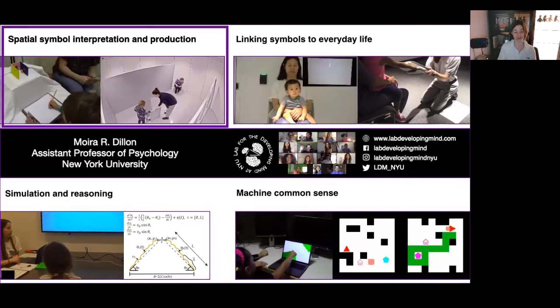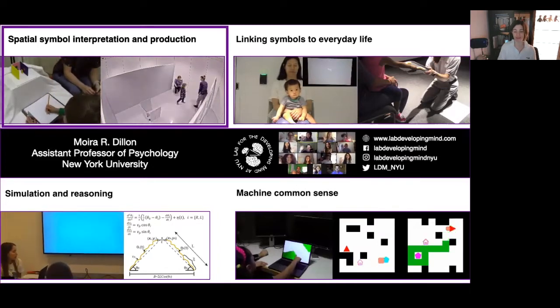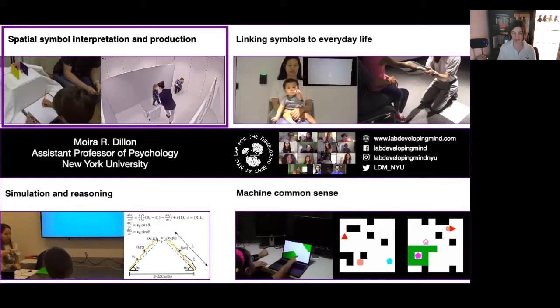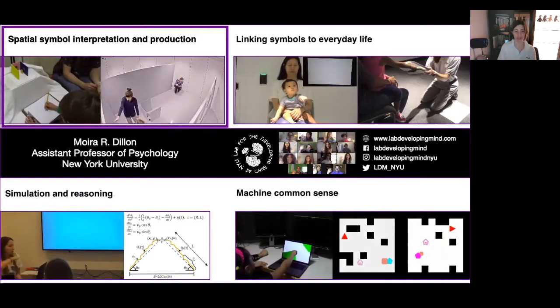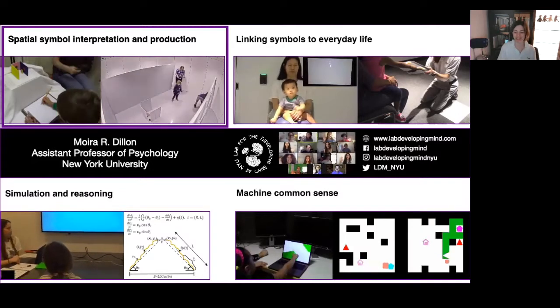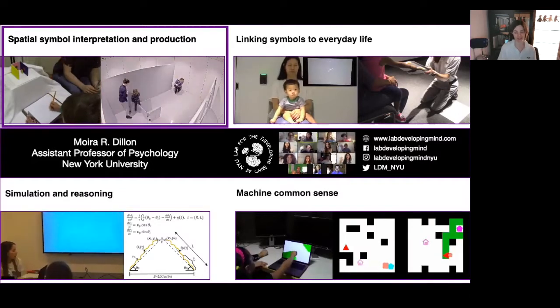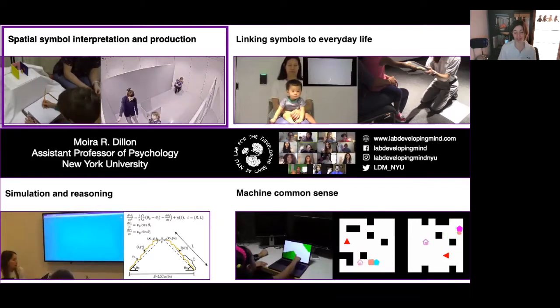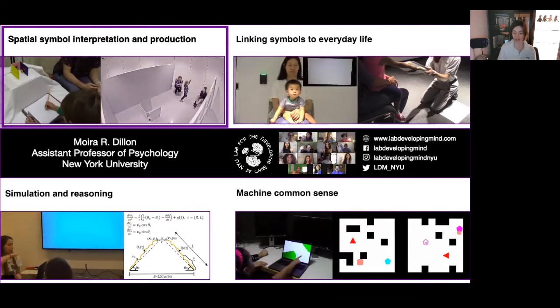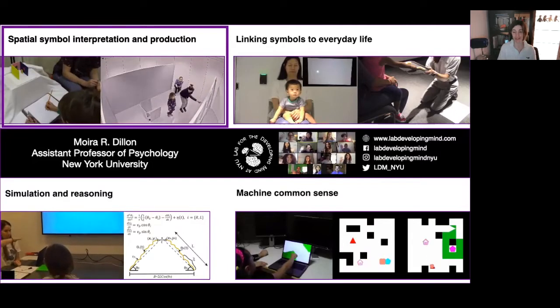One active line of research in the lab focuses on children's spatial symbol interpretation and production. So for example, we asked what children include in their pictures when asked to draw exactly what they see. Drawing seems like an epitome of uniquely human expression, but we're exploring whether our symbolic art may in fact be constrained by our cognitive geometry, a constraint evidenced in young children's drawings.